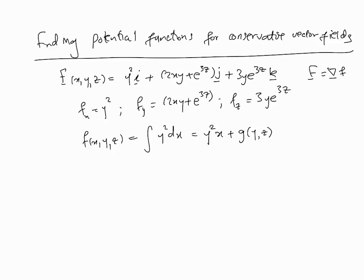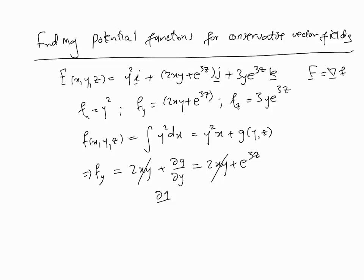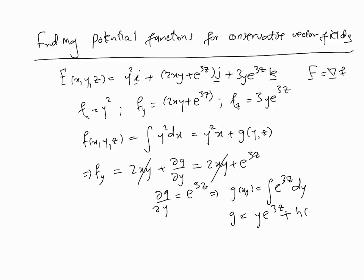Taking the y derivative of f gives fy = 2xy plus partial g over partial y. Setting this equal to the known fy = 2xy plus e to the 3z, the 2xy terms cancel, leaving partial g over partial y = e to the 3z. Integrating with respect to y, g(y, z) = y·e to the 3z plus a function h of z only.